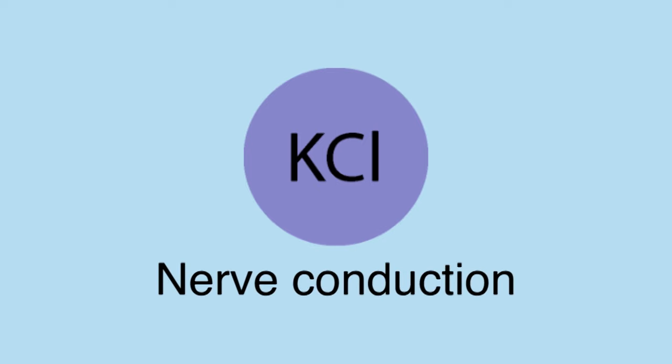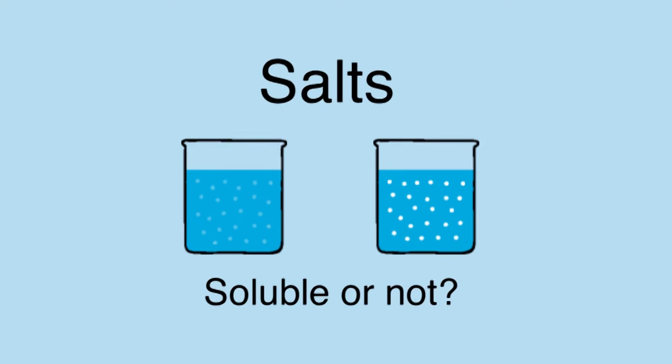Potassium chloride plays an important role in nerve conduction. Without it, no chemical messages would be relayed. How would you know if a salt is soluble in water or not, just from its formula or from its constituent ions? This is actually possible.